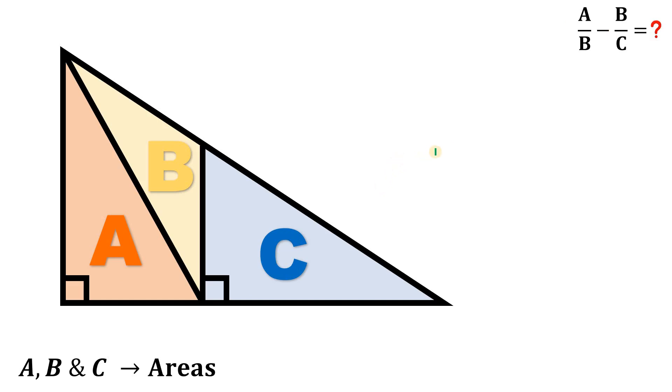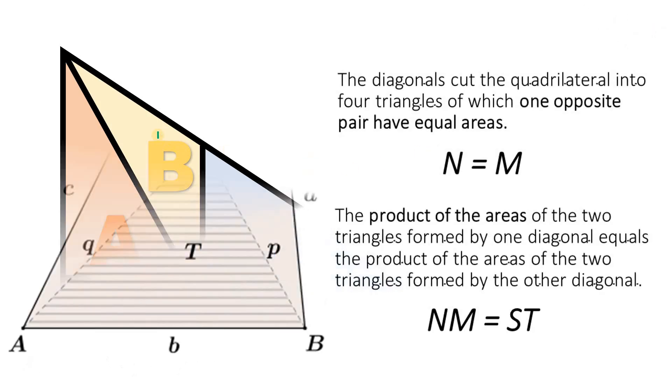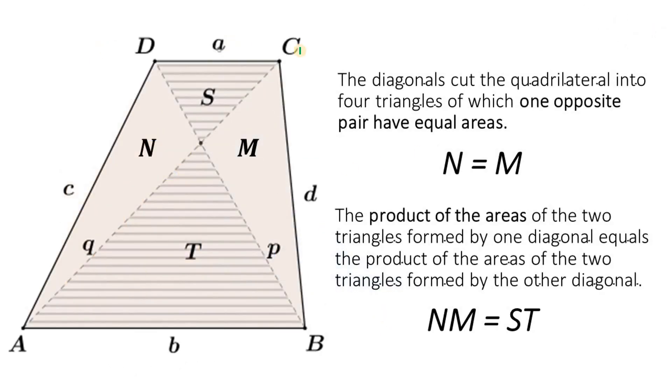we will use two different concepts. The first one is when we have a trapezoid A, B, C, D and the diagonal cut the quadrilateral into four triangles of which one opposite pair have equal areas namely N and M must be equal. So take note, when we add S on both sides, this area S, this is just the same thing. So we will use this concept to answer this kind of question.